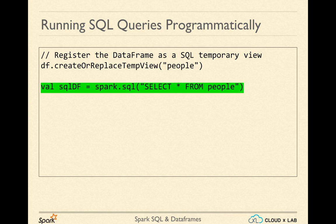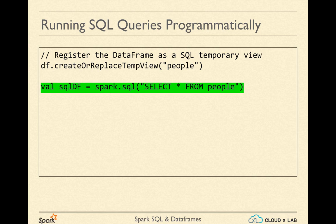Afterwards, you can call the SQL method on the SparkSession object with whatever SQL query you want. The DataFrame will be made available as a table view to your query. Here, we have created the tempView with the name 'people' from DF and then used SELECT * FROM people as the SQL query. The result of the SQL method is another DataFrame on which you can call various DataFrame methods.